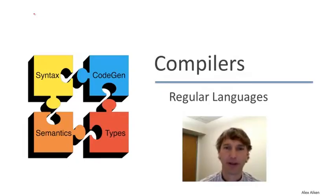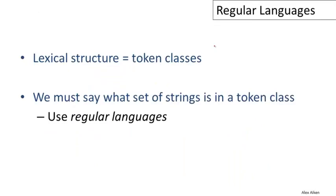In this video, we're going to talk about regular languages, which are used to specify the lexical structure of programming languages. To briefly review: the lexical structure of a programming language is a set of token classes, and each token class consists of some set of strings. We need a way to specify which set of strings belongs to each token class, and the usual tool for doing that is to use regular languages. We're going to define what they are, and then in subsequent videos look at examples in actual programming languages.